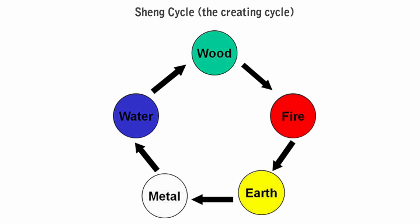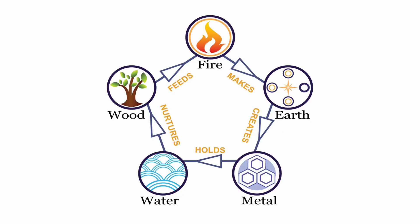Take fire for example: fire generates earth, thus fire is the mother of earth and earth is the child of fire. The other four elements follow this example: wood creates fire — wood is burned to make fire; fire creates earth — when fire burns it leaves ash, which creates earth; earth creates metal — earth produces ore from which we create metal tools; metal creates water — water condenses on metal surfaces; water creates wood — water is vital to a tree's ability to grow and provide wood.